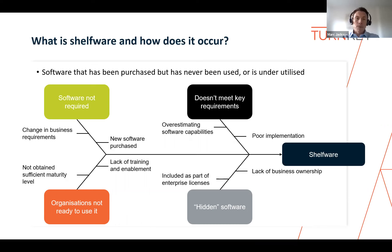But how does this widespread problem materialize in the first place? This cause and effect diagram helps explain some of the main contributory factors. The bigger boxes on the outside illustrate key high-level factors, and the content in the middle provides underlying details. Starting with the top left — 'software not required' — this contributing factor is probably more widespread than you think. The underlying business requirements were not clearly identified in the first place, so the software was purchased based on incomplete or incorrect requirements.